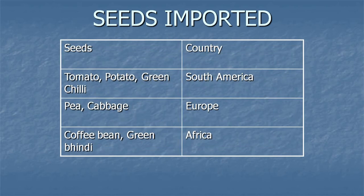Seeds imported to India: tomato, potato, and green chilies came to India from South America. Pea and cabbage also came to India from South America. Coffee came to India from South Africa.